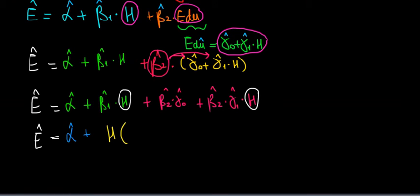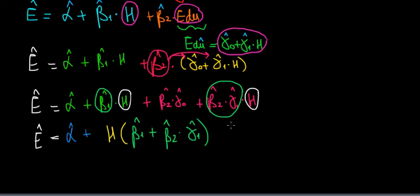What kind of coefficients are we left with? We have beta 1 left from here plus beta 2 times gamma 1. And then we're left with this constant, beta 2 times gamma 0, which is a number, so we can consider it as a constant.